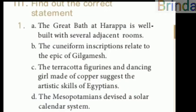Moving on to find the correct statement. First — the great bath at Harappa is well built with several adjacent rooms. Second — the cuneiform inscriptions relate to the epic of Gilgamesh. Third — the terracotta figurines and dancing girl made of copper suggest the artistic skill of Egyptians. Fourth — the Mesopotamians devised a solar calendar system. The answer is A: the great bath at Harappa is well built with several adjacent rooms.